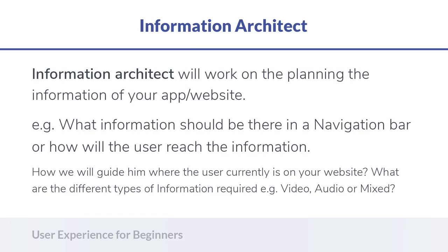The information architect plans the whole information of any app or website — how it is going to be displayed and how the user is going to find it. Whether information should be in video format, audio format, text with headings, or images. On Facebook, for example, there are different kinds of posts: photos, video posts with text, and embedded links — different types of information blocks.